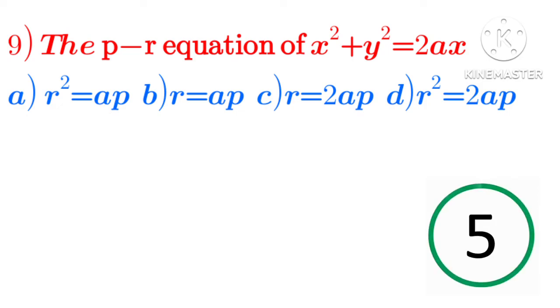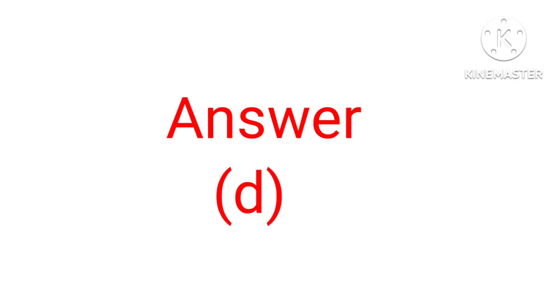Second option: r equal to a p, r equal to 2a p, r equal to 2a p, r square equal to 2a p. Answer is b.